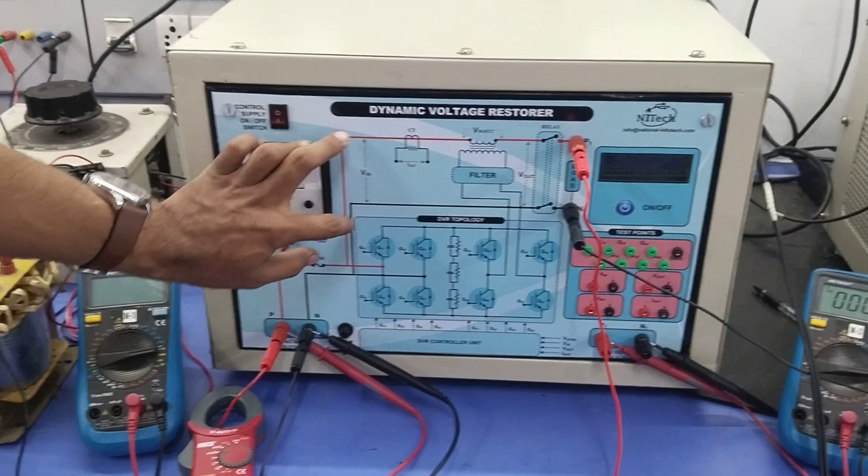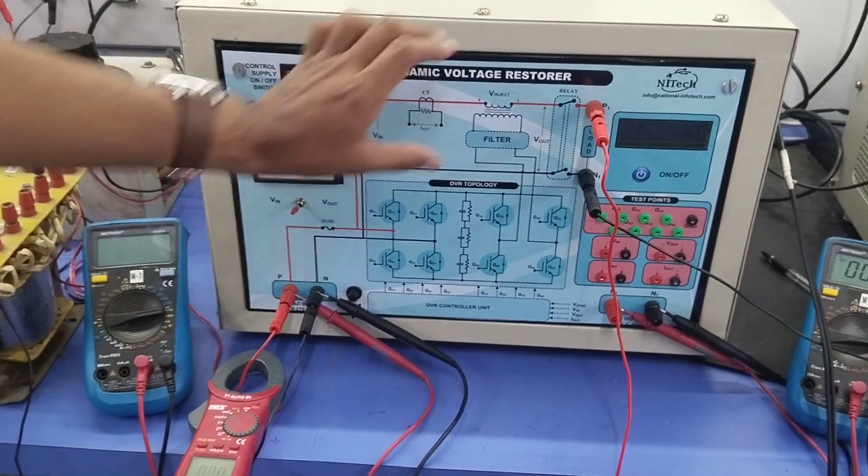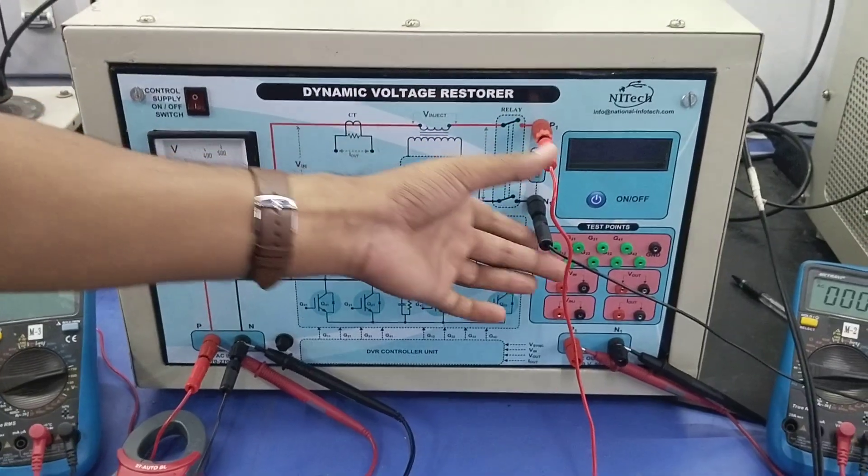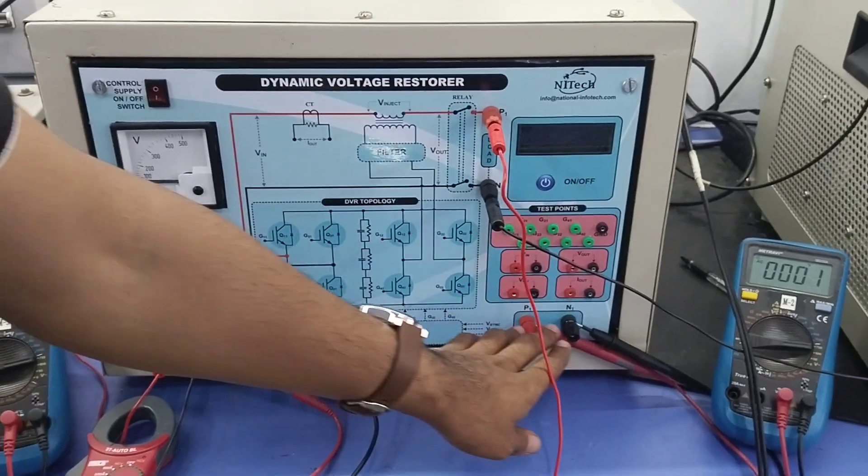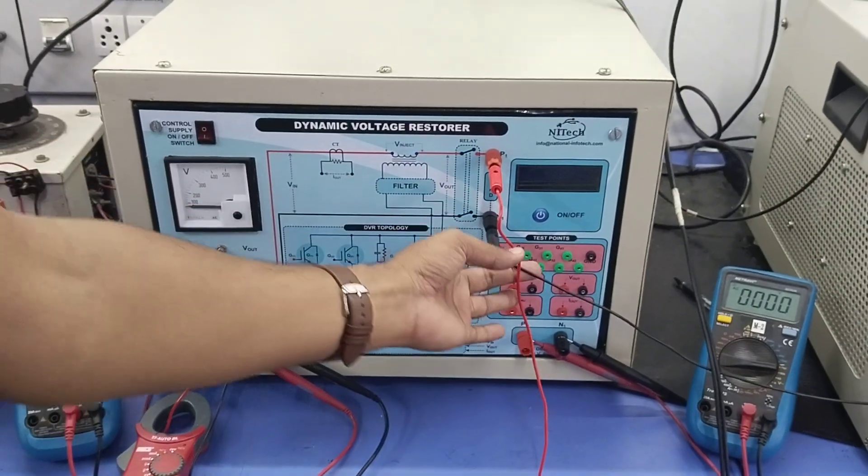Now for the power terminals, supply voltage V_in should be connected at this point, load terminal V_naught should be connected here, and these are the test terminals for observing the load voltage.